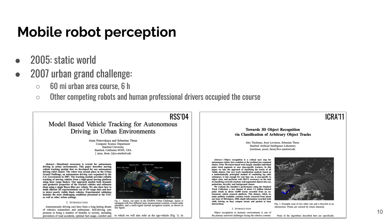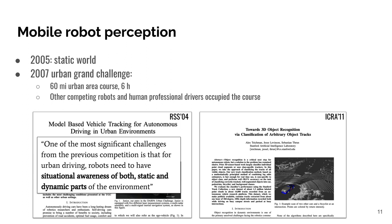This setting changed in 2007. That year's challenge was about a 60-mile course in an urban area, which was occupied by other competing robots as well as human drivers. To quote the report, one of the most significant challenges from the previous competition is that for urban driving, robots need to have situational awareness of both static and dynamic parts of the environment.